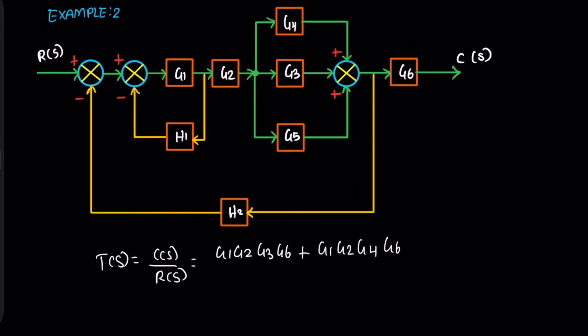Now the next one, moving this path. The path gain is the product of G1, G2, G5, and G6.